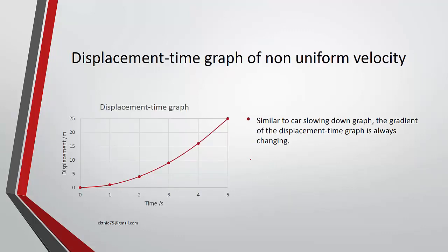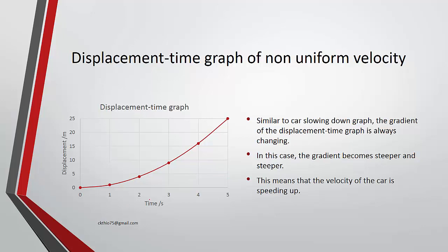This is the graph. Similar to the car slowing down, the gradient is always changing because it's a curve. In this case, the gradient becomes steeper and steeper, meaning the car's velocity is speeding up. It starts flat initially, then becomes steeper and steeper.